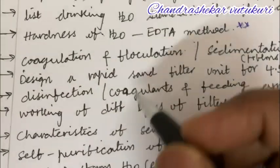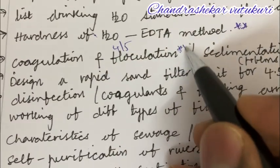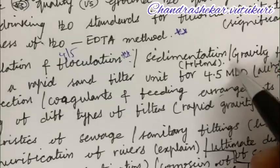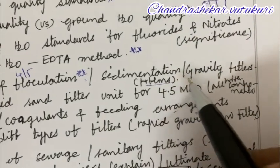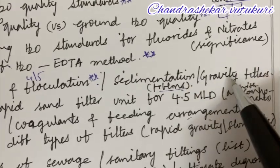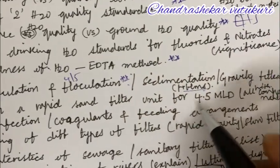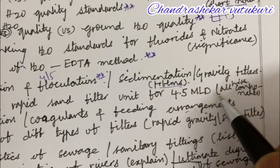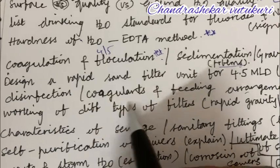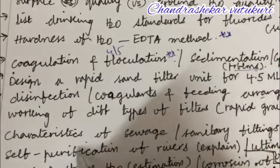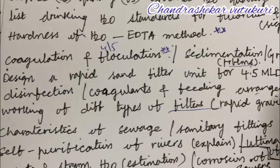Let's jump into the second unit — it is all about the fourth and fifth question. Coagulation and flocculation is said to be the topmost question, and differences in sedimentation as well as gravity filters along with a problem is also topmost. Design a rapid standard filter unit for 4.5 MLD along with all its components is said to be the topmost question. Disinfection, coagulants and feeding arrangements, as well as working of different types of filters — rapid gravity and slow filters.